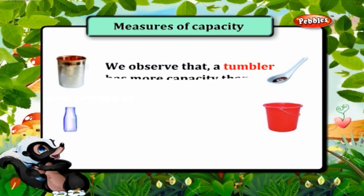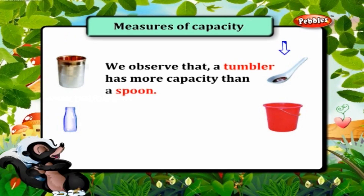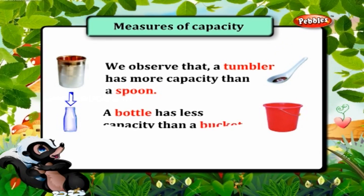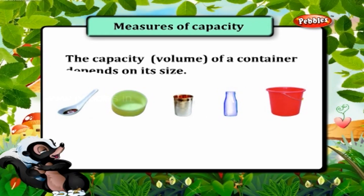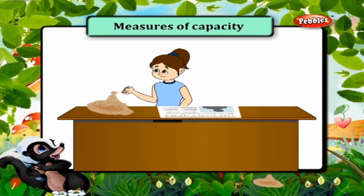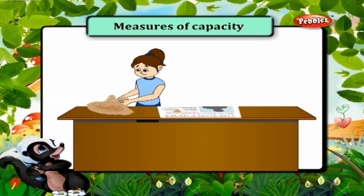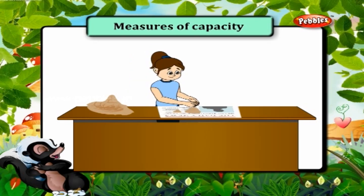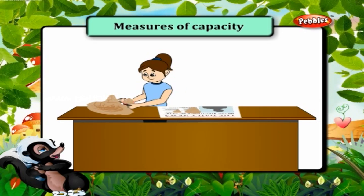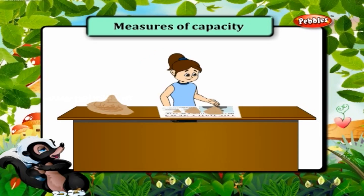We observe that a tumbler has more capacity than a spoon, and a bottle has less capacity than a bucket. The capacity or volume of a container depends on its size. Take sand in a spoon and pour it on a newspaper sheet. Take sand in your hands and pour next to the previous heap. Take sand in a bowl and pour next to the two heaps. Compare the three heaps and find which has the least capacity — the spoon, bowl, or the two hands. The spoon has the least capacity.